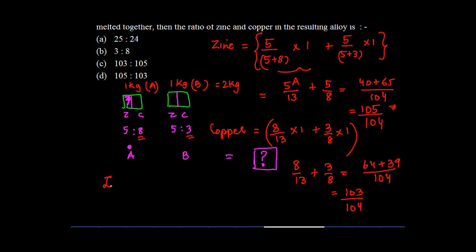So the ratio of zinc and copper in the melted alloy is how much? It's 105 by 104 is to 103 upon 104. Since the denominators are common, we can just remove them, so the ratio is simply 105:103, which is answer number D.